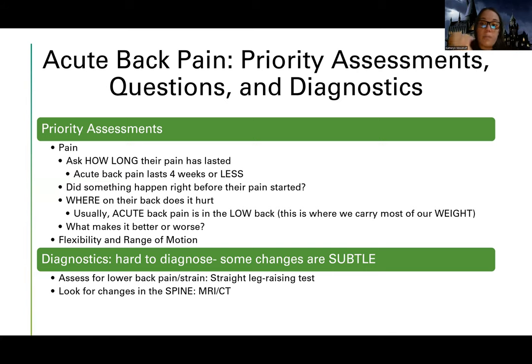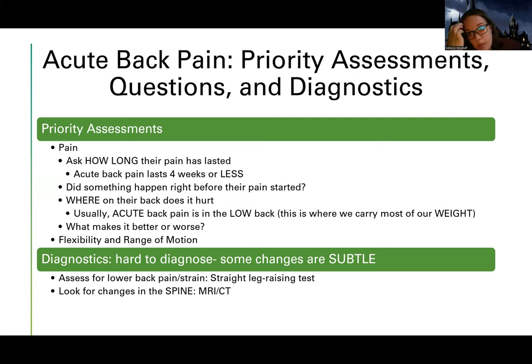Sometimes they can see deeper injuries, so they may get an MRI or CT. Usually with spine issues, MRI is going to be more accurate and provide more information, though not always.